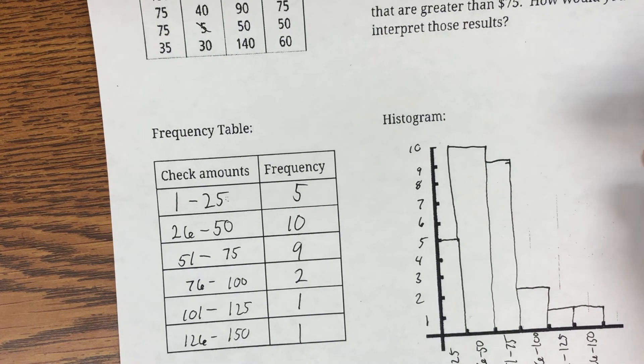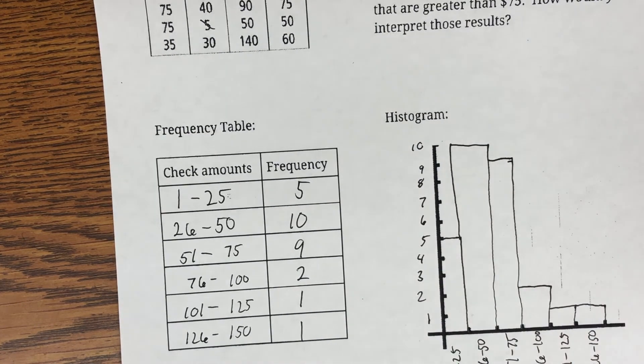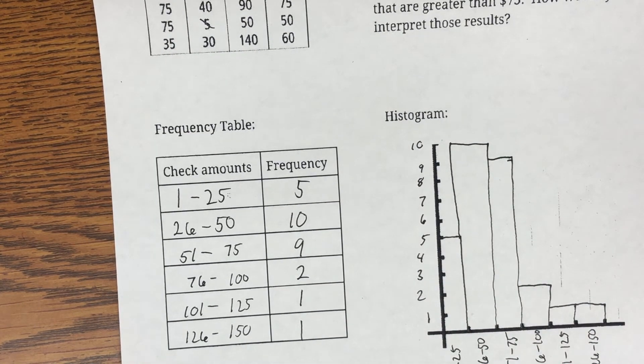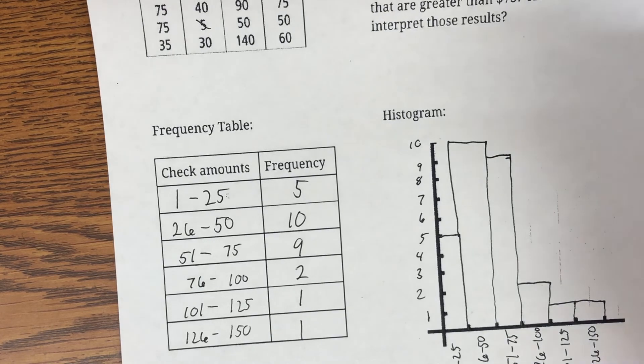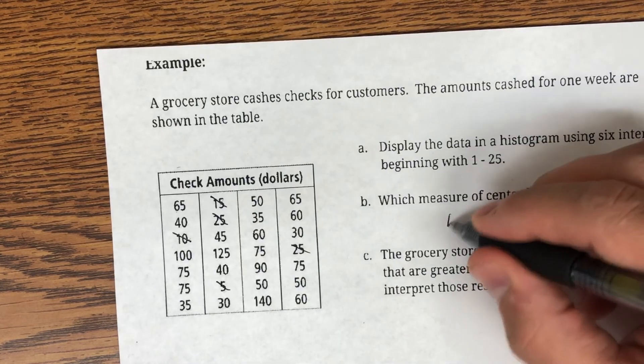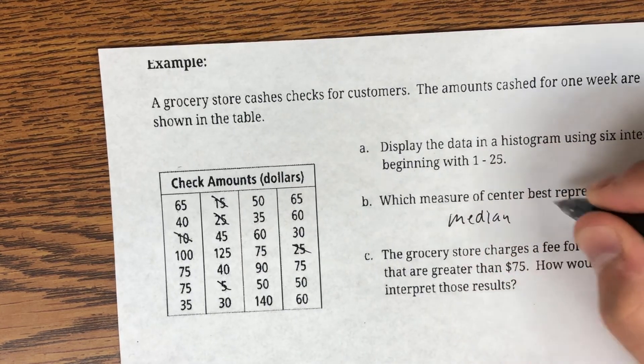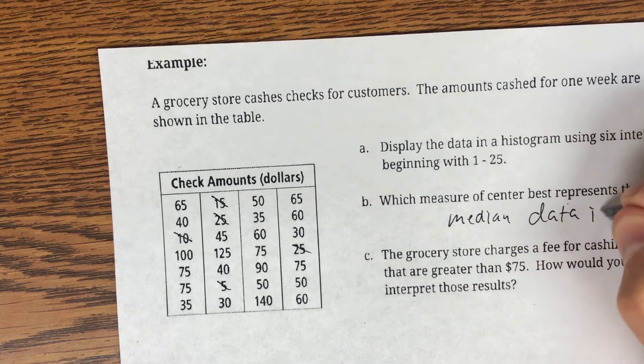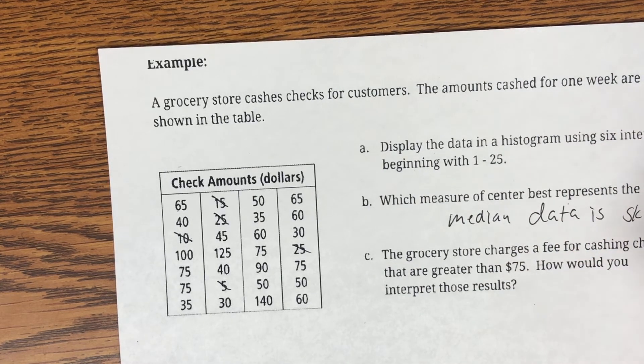So, when I take a look at this, most of the data is here to the left. So, it is actually skewed to the right. Which measure would best be used to show the data? We would want to use the median because the data is skewed right.